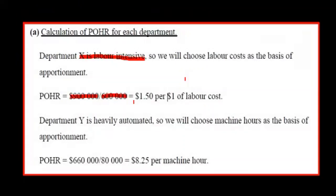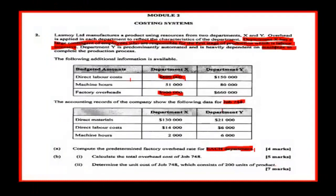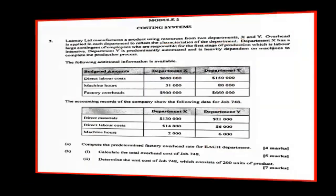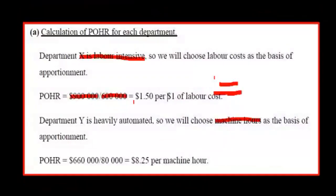Department Y is heavily automated, so we will choose machine hours as the basis of apportionment. The POHR would be 660,000 divided by 80,000, giving us 8.25 per machine hour. The data is taken from the table provided.